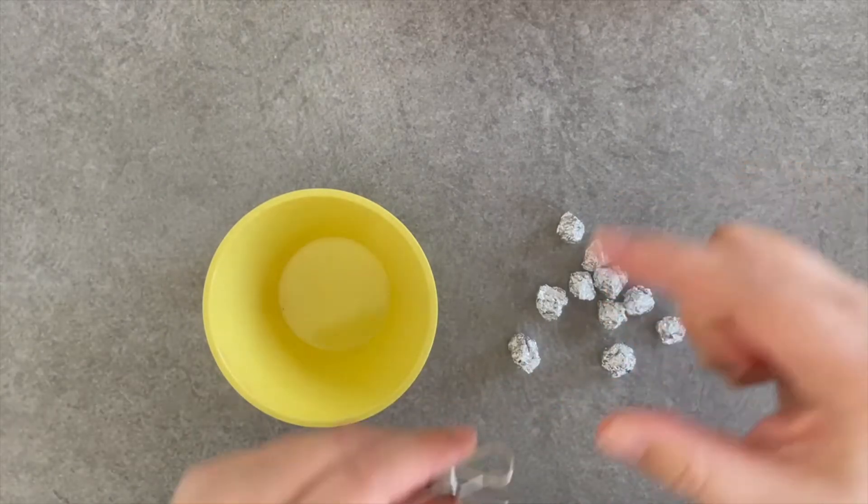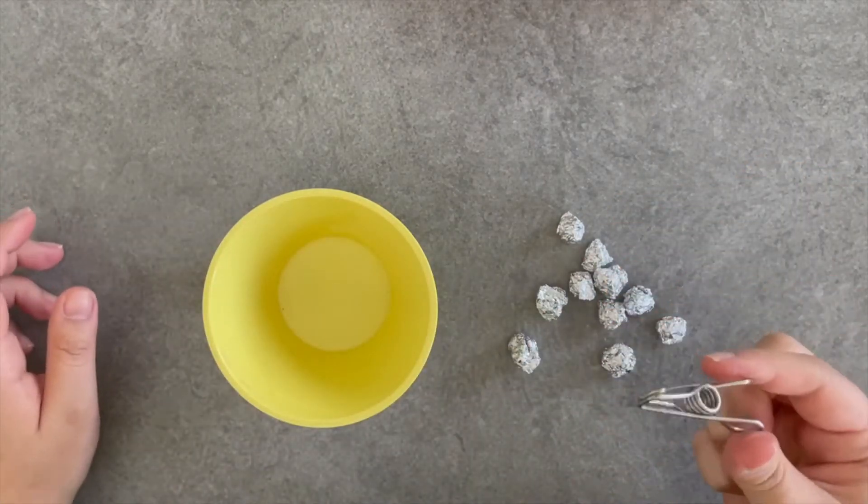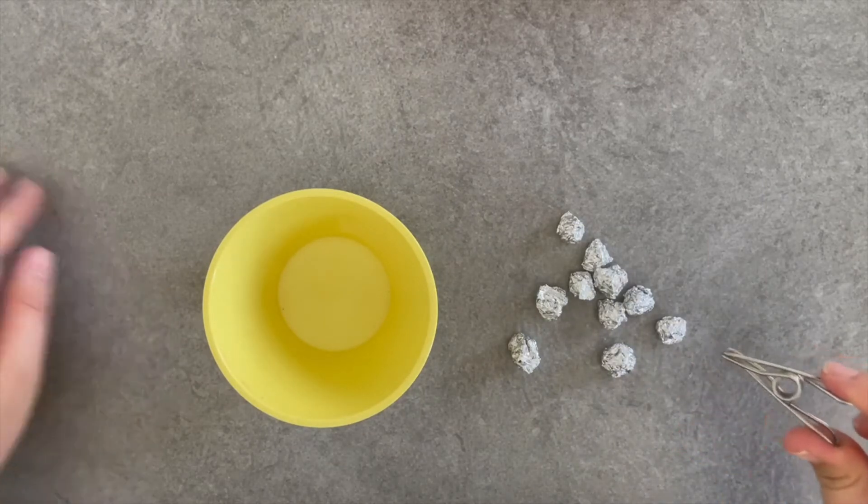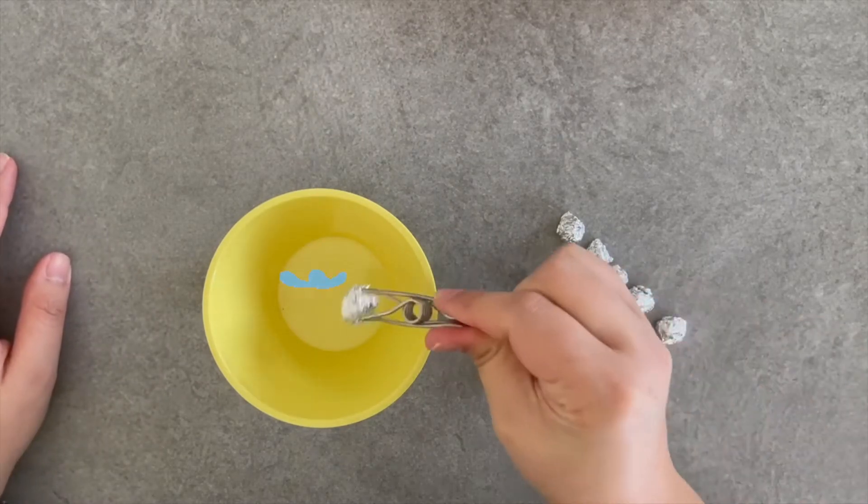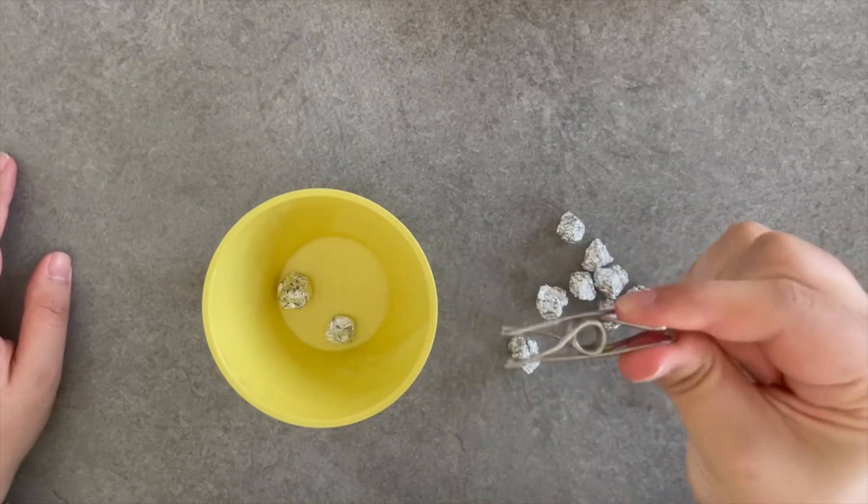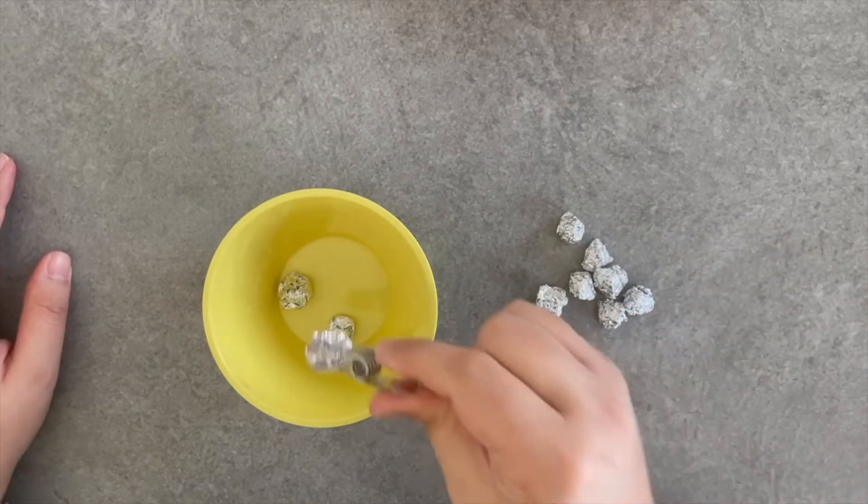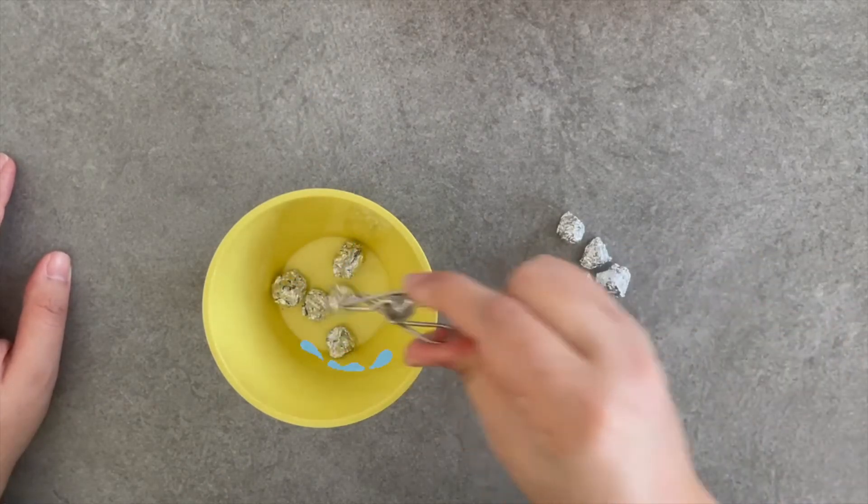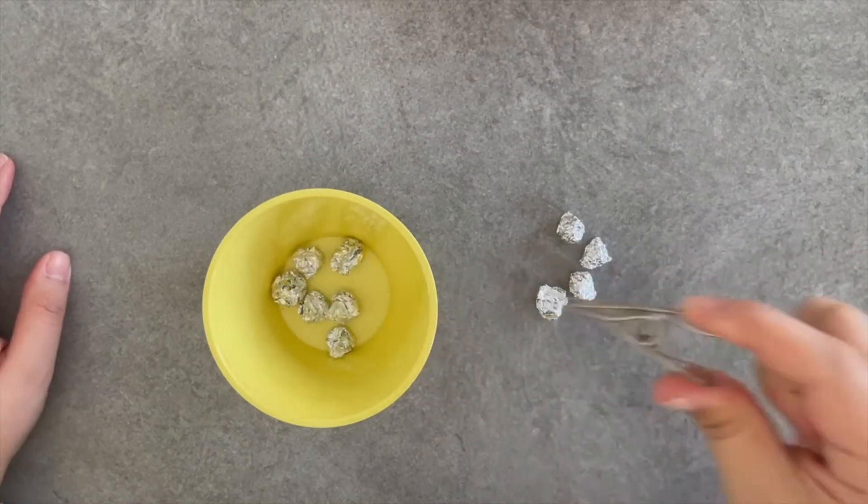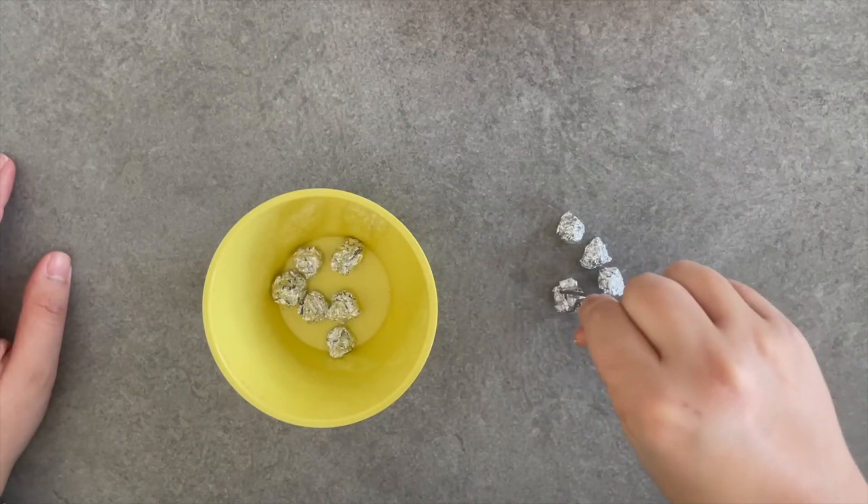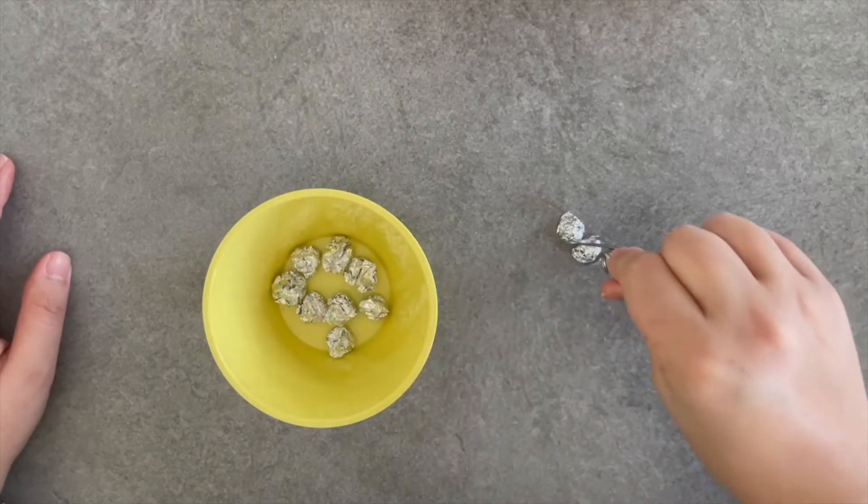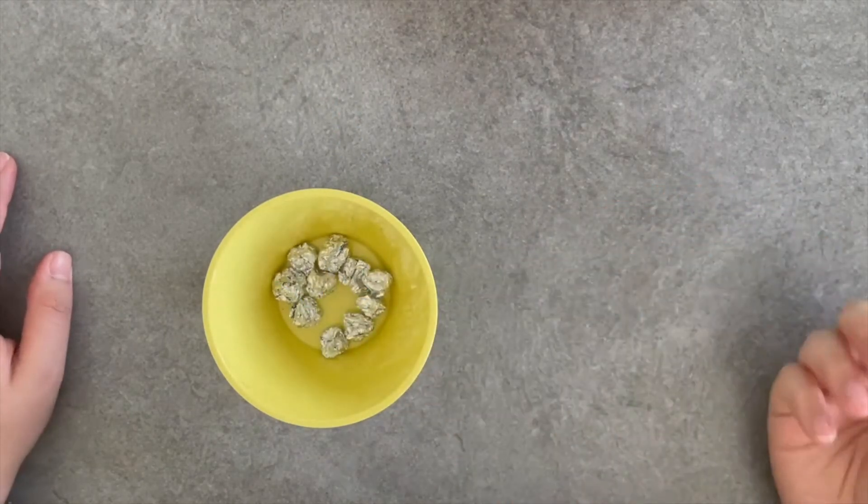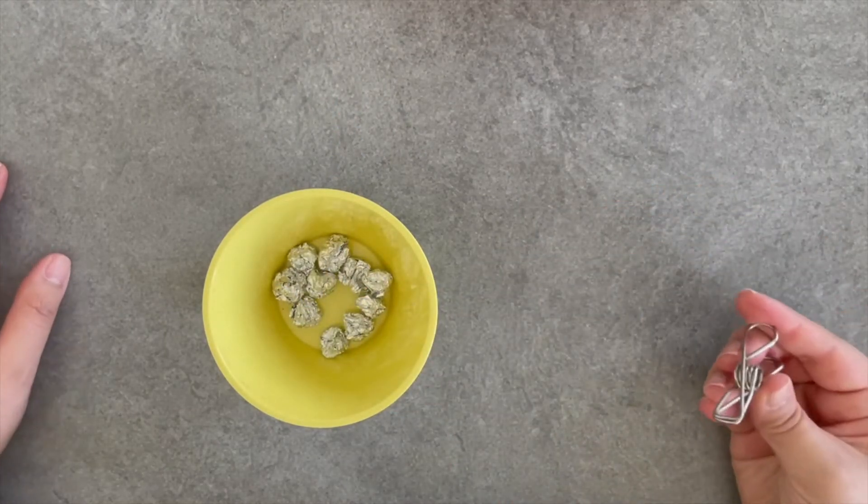Again, just using our pinching fingers we are going to pinch all ten balls of foil into our bowl. Let's go. We're trying to get them nice and strong. I've got three, four, five, six, seven, eight, nine, and ten. Let's see how fast we can take them out again.